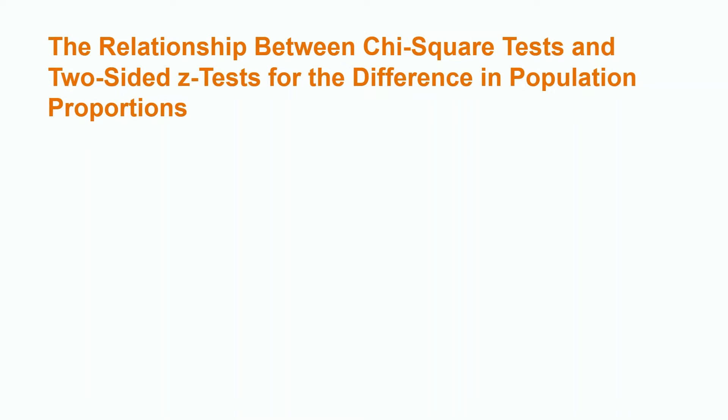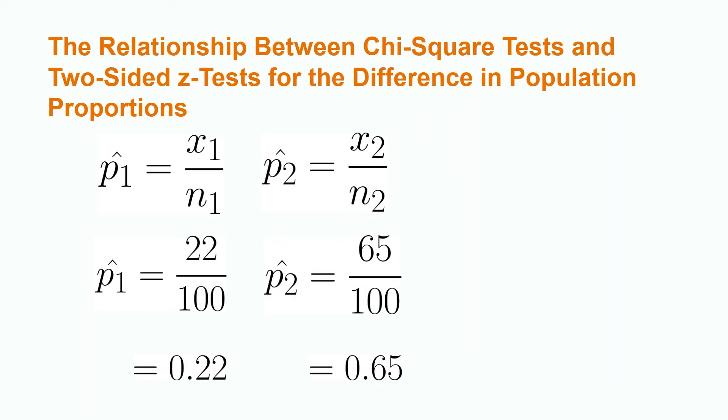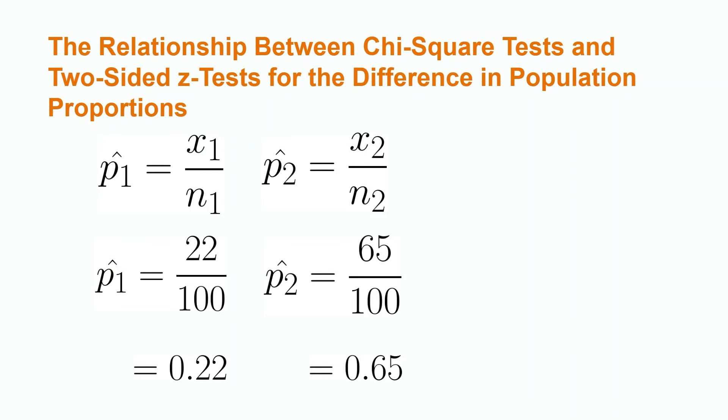Now let's calculate the z-test statistic and p-value. We obtain our values of p-hat 1 and p-hat 2 by dividing the number of women with a bachelor's degree by the total number of women in the sample. The value of p-hat is obtained by adding the total number of women with a bachelor's degree for each group and then dividing by the total number of participants.